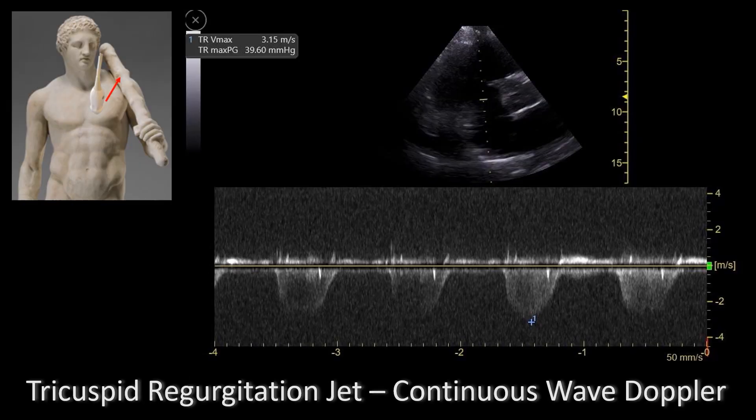This is a TR jet from the parasternal short axis right ventricular inflow view. As you can see, we have a much better quality Doppler signal since the borders are much better delineated and we can easily measure them. The ultrasound machine is giving us the TR pressure gradient using the modified Bernoulli equation. We can just add the right atrial pressure — which in this case is 3 — and we get the right ventricular systolic pressure, which is indicative of mild pulmonary hypertension.